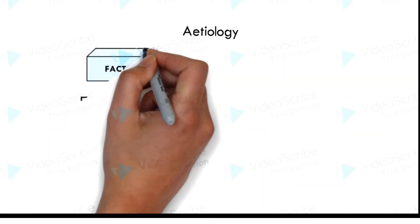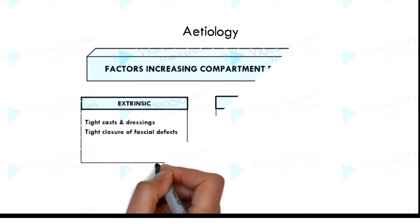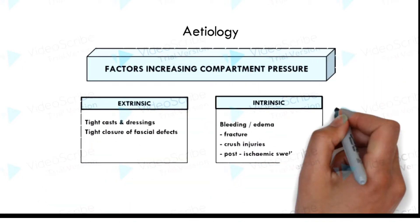Etiology: An increase in compartment pressure is caused by both intrinsic and extrinsic factors. The extrinsic factors are tight casts and dressings, as well as tight closure of fascial defects. The intrinsic factors are bleeding and edema due to fractures, crush injuries, and post-ischemic swelling.